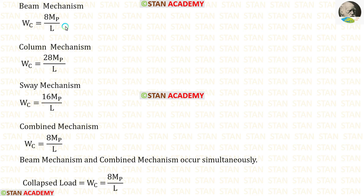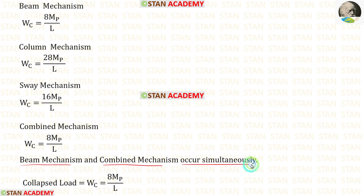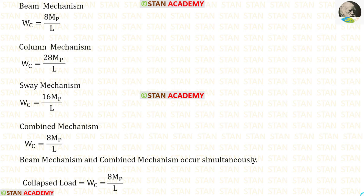We found the collapse load Wc four times — in the beam mechanism, column mechanism, sway mechanism, and combined mechanism. We select the minimum value, which is 8MP/L. The beam mechanism and combined mechanism occur simultaneously. So the collapse load Wc = 8MP/L. Thank you for watching this video. We will see you in the next video.